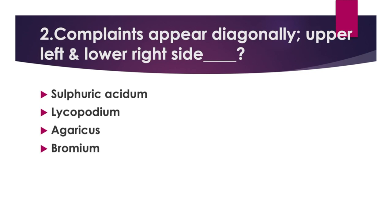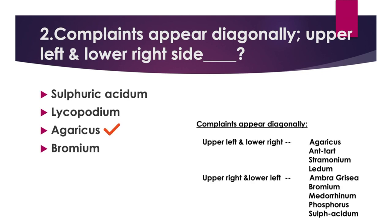Complaints appear diagonally — upper left and lower right: Option A: Sulfuric acid, Option B: Lycopodium, Option C: Agaricus, Option D: Bromium. Answer: Option C, Agaricus. Complaints appearing diagonally upper left and lower right: Agaricus, Antimonium tartaricum, Stramonium, Ledum. Upper right and lower left: Ambra grisea, Bromium, Medorrhinum, Phosphorus, Sulfuric acid.